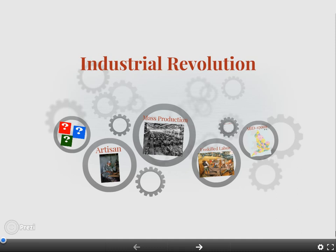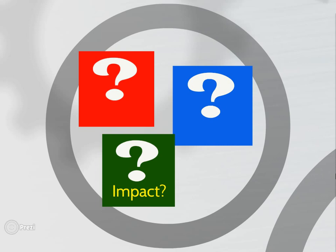The first essential question is: what impact did the Industrial Revolution have on people? And we're not talking about just from a positive standpoint — there are lots of negative impacts as well. We're also going to talk about where and when the Industrial Revolution began. It didn't begin here in the United States; when it began, the United States wasn't even a country yet. And also: what preconditions were present which allowed the Industrial Revolution to take place?